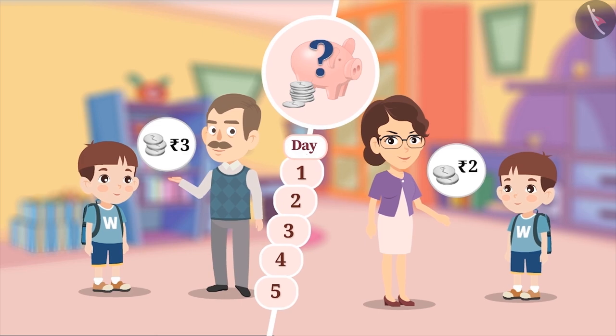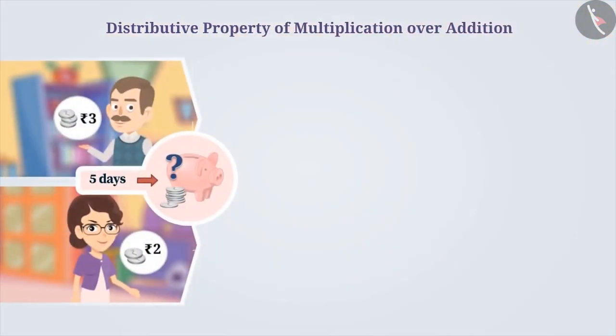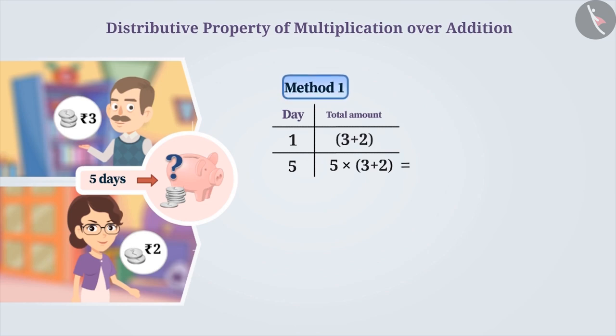There are two ways to solve this. Method 1: Calculate the total amount saved in a day which is 3 plus 2 rupees. So, in 5 days you will be able to save 5 into 3 plus 2 rupees. The solution to this is 5 into 5 which is equal to 25.